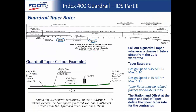For guardrail tapers, call out begin guardrail taper with a station and offset, and end taper with a station and offset — those offsets and stations define the taper rate for the contractor. Per the IDS, for design speed ≤45 mph the maximum taper rate is 1 to 10; for design speed >45 mph the maximum taper rate is 1 to 15. Taper rates may also be refined further per the AASHTO Roadside Design Guide, which provides recommended taper rates and is a good justification for how you've laid out your plans.